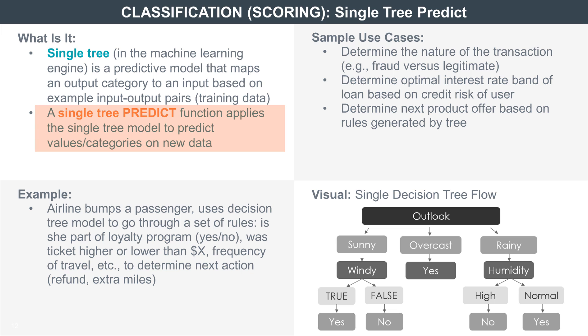Single tree PREDICT classifies data into specific buckets by applying the single tree model. They are called scoring algorithms as they score new data by creating categories. By the way, these categories can be numeric, alphabetical, or they can be labeled — as in cat, dog, animal, thing, etc.